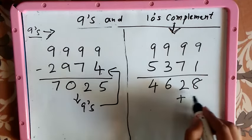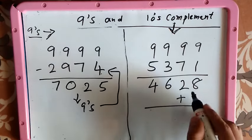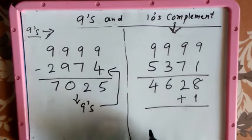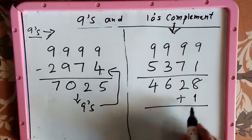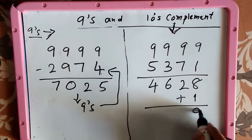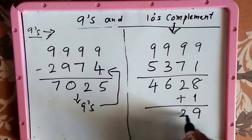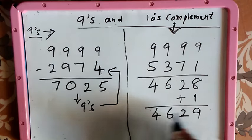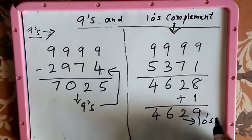To the given answer from the first solution, 8 plus 1 is 9, then the remaining numbers are 2, 6, 4. So 4629 is the 10's complement of the number 5371.